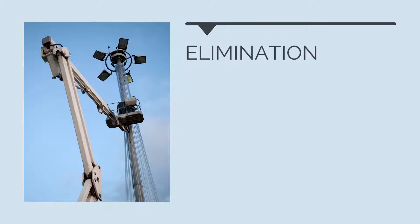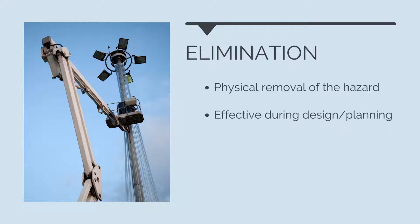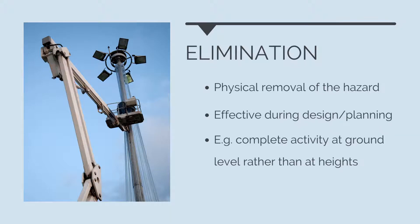An elimination control offers the highest level of protection and is the most effective control. It involves the complete physical removal of the hazard, and can be more effectively implemented during the design and planning stage of the project. As an example, if we have the hazard of working at heights while installing lift fittings, an elimination solution would be to install the lift fittings at ground level and then stand the poles, completely eliminating the hazard of working at heights.